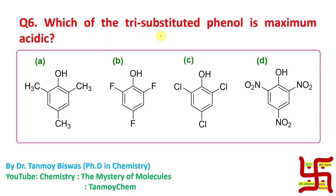Now the question is: which of the tri-substituted phenols is maximum acidic? Four options are provided. Remember students, whenever a question of acidity appears, you need to think about the proton-releasing capability.